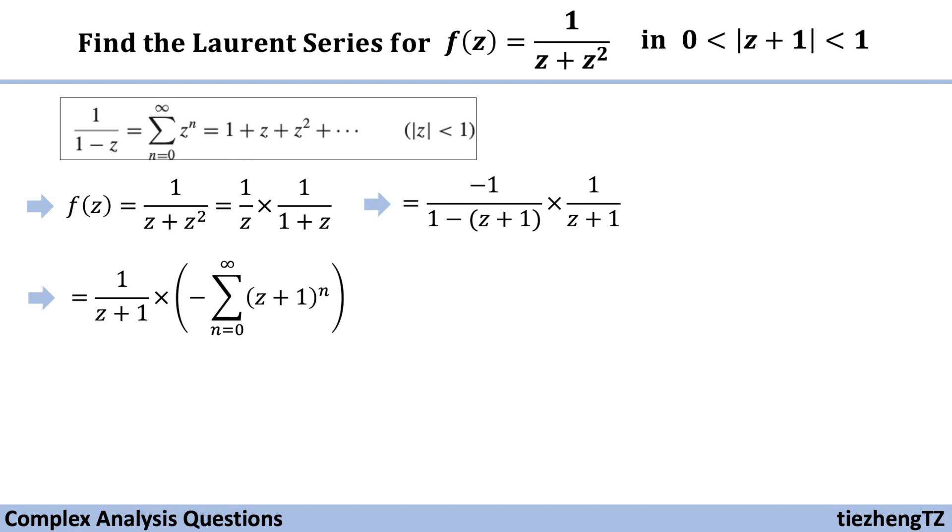And of course we can just move 1 over z plus 1 into the sum, which becomes minus sum (z plus 1) to the power of n minus 1.